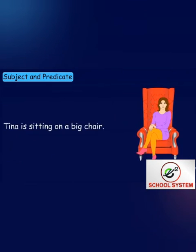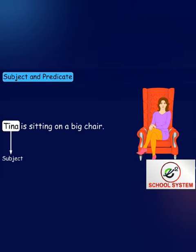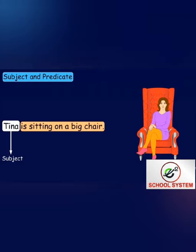Tina is sitting on a big chair. Here, we are talking about Tina. So 'Tina' is the subject of the sentence. And what is being said about Tina? We are saying 'Tina is sitting on a big chair.' So 'is sitting on a big chair' is the predicate of the sentence.